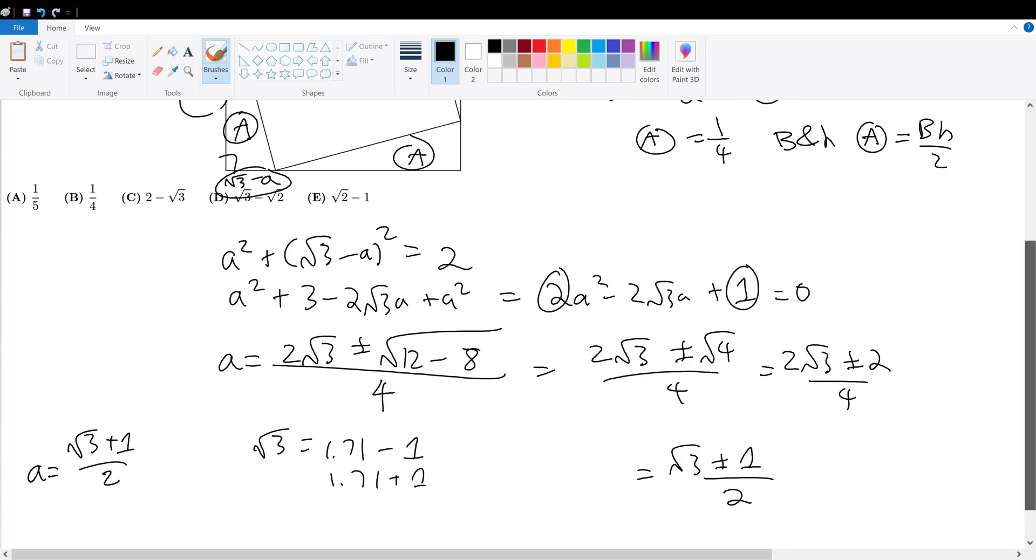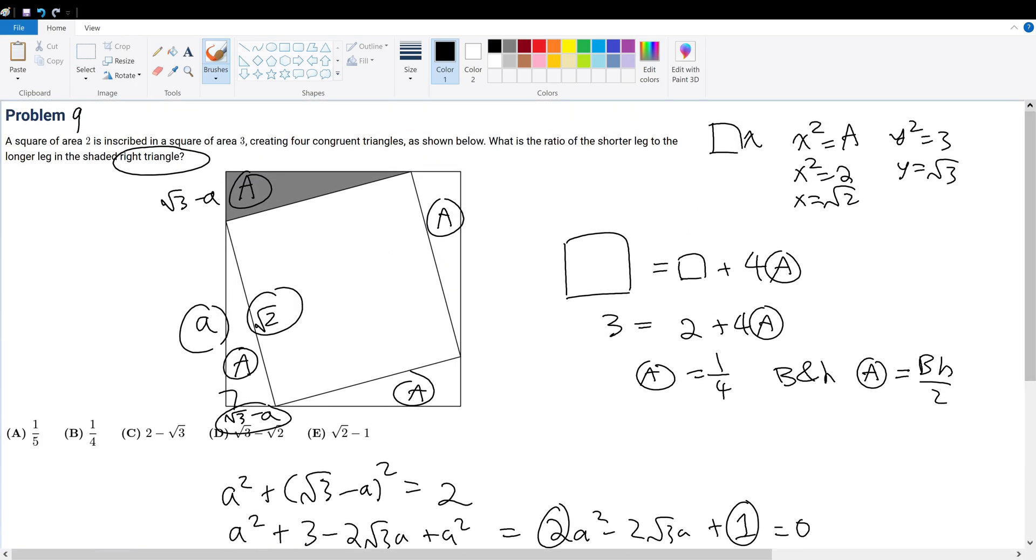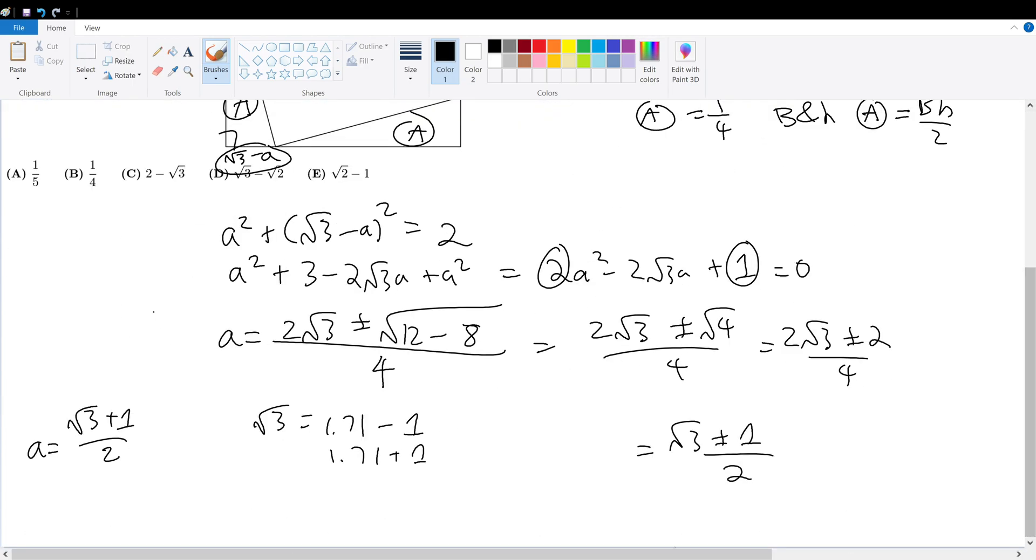We are trying to find the ratio of the shorter leg to the longer leg. So that means we are trying to find the ratio of root 3 minus A over A. If we chose this to be A, this becomes root 3 minus A. So root 3 minus root 3 plus 1 over 2 will give me root 3 minus 1 over 2 in the numerator.